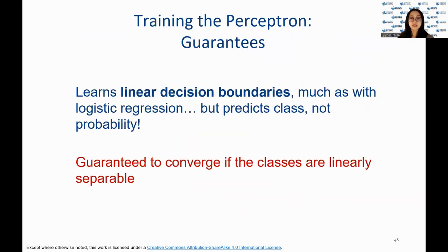Now let's discuss the training process of the perceptron algorithm. The perceptron algorithm learns linear decision boundaries similar to logistic regression. However, unlike logistic regression, the perceptron predicts class labels, not probabilities. The algorithm is guaranteed to converge if the classes are linearly separable. In other words, if there exists a linear boundary that can correctly classify all instances, the perceptron will find it. This guarantees the ability of the perceptron to learn and classify linearly separable datasets.